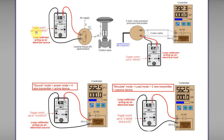Source mode is the mode that not only injects a signal but also provides the power to power the whole loop. Whereas simulate mode is just a mode that injects a signal to the loop; however, it does not provide the power to power the loop.